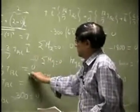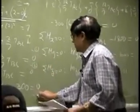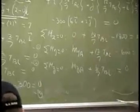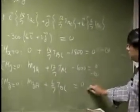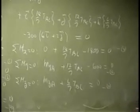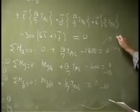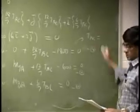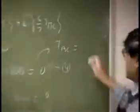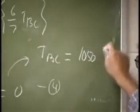So we have 6 equations. You have equation 1, equation 2, equation 3, then equation 4, equation 5, and equation 6. From this equation you solve for T_BC, and that comes out to be 1050 pounds.